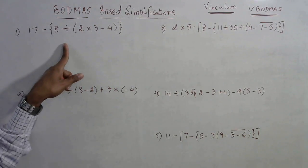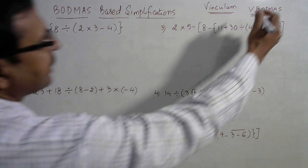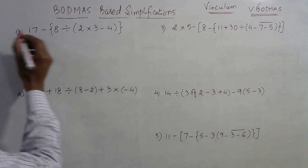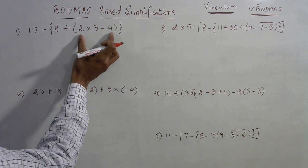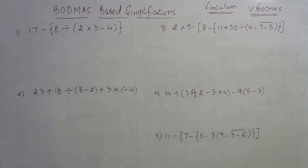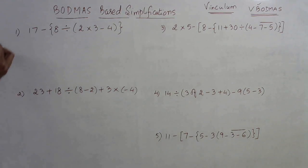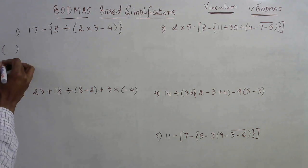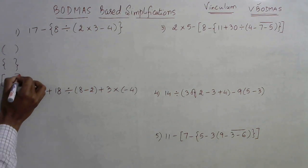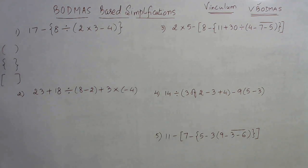Let us see the first question using this concept. There is no vinculum here, so we get on with the brackets. We have a parenthesis first, so we simplify the parenthesis bracket first. In competitions, the sequence for using brackets is: solve the parenthesis first, then curly brackets, then square brackets. In this first question we have only the parenthesis and curly brackets — there is no square bracket, so it is a less complicated problem.